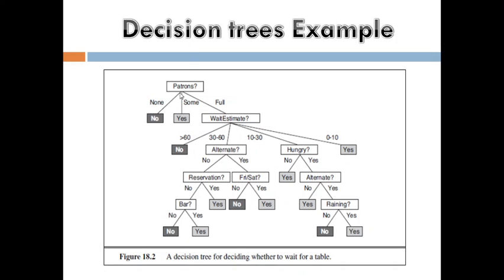Now consider the textbook example. You are going outside with family for eating — going to a restaurant or hotel. You think about whether the taste is good or bad. If some patterns exist in the restaurant, you will go. If the restaurant is full, the next question is waiting time. If the waiting time is greater than 60 minutes, you will not prefer it. If the waiting time is 30 minutes, you take an alternate. If waiting time is 10 to 30 minutes and you are hungry, you will not wait. If waiting time is 0 to 10 minutes, you will wait.